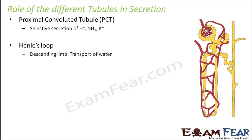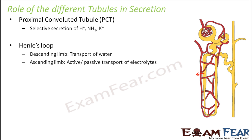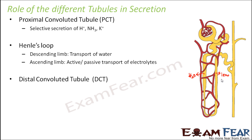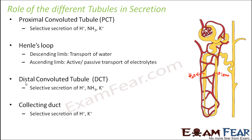In the Henle's loop, the descending limb transports water out of the filtrate, while the ascending limb, being permeable to electrolytes, helps in active or passive transport of electrolytes. The distal convoluted tubule performs selective secretion of hydrogen ions, potassium ions, as well as ammonia. And finally, the collecting duct also helps in selective secretion of hydrogen and potassium ions. So each part of the renal tubule helps in both reabsorption and secretion.